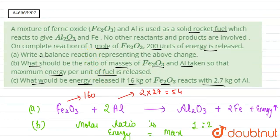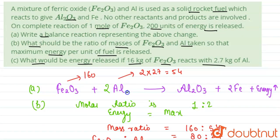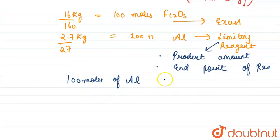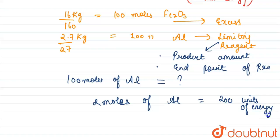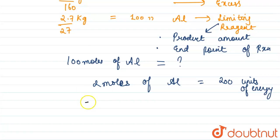As we can see, when 2 moles of aluminum react, the energy released is 200 units. 2 moles of aluminum give us 200 units of energy. Now we have 100 moles of aluminum, so 100 moles of aluminum will give us 200 upon 2 into 100 units of energy.